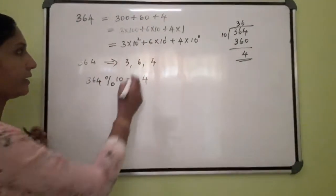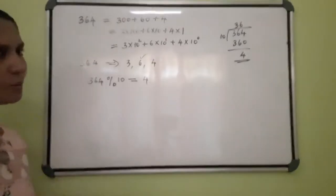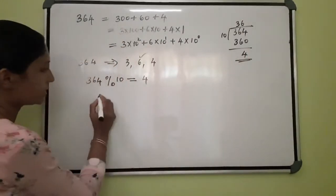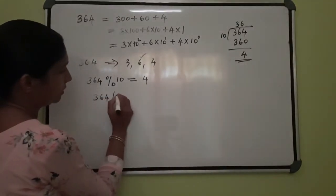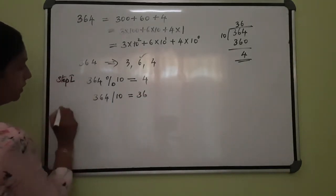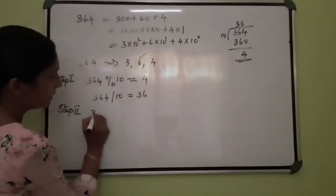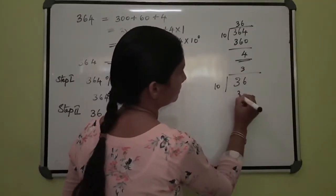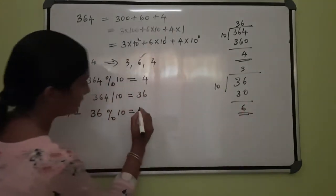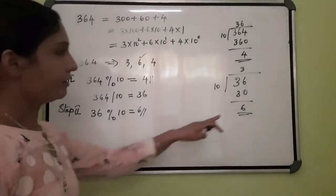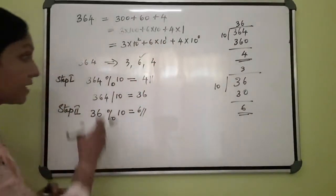I need to separate the second digit. If you do the mod operation again and again, you won't get the second digit. So you have to take the quotient. To get that quotient, divide by 10 and you will get 36. This is step 1. In step 2, take 36 mod 10 — you will get 6. First time you got 4, next time 6. Two digits you got. The same process we are continuing.